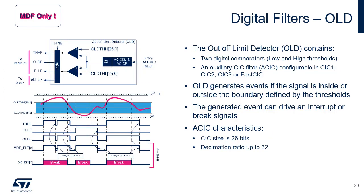The out-of-limit detector triggers an event when a signal reaches or crosses given maximum and minimum threshold values. The out-of-limit detector or OLD contains two digital comparators. These comparators are connected to the output of the auxiliary CIC called ACIC. This auxiliary CIC filter can be configured in CIC1, CIC2, CIC3 or fast CIC with a decimation ratio up to 32. The ACIC size is 26 bits. The data source of ACIC is the same as MCIC and can be either a sensor connected to the serial interface or ADC1. The out-of-limit detector generates events if the signal is inside or outside the boundary defined by the thresholds. The generated event can drive an interrupt or break signals.